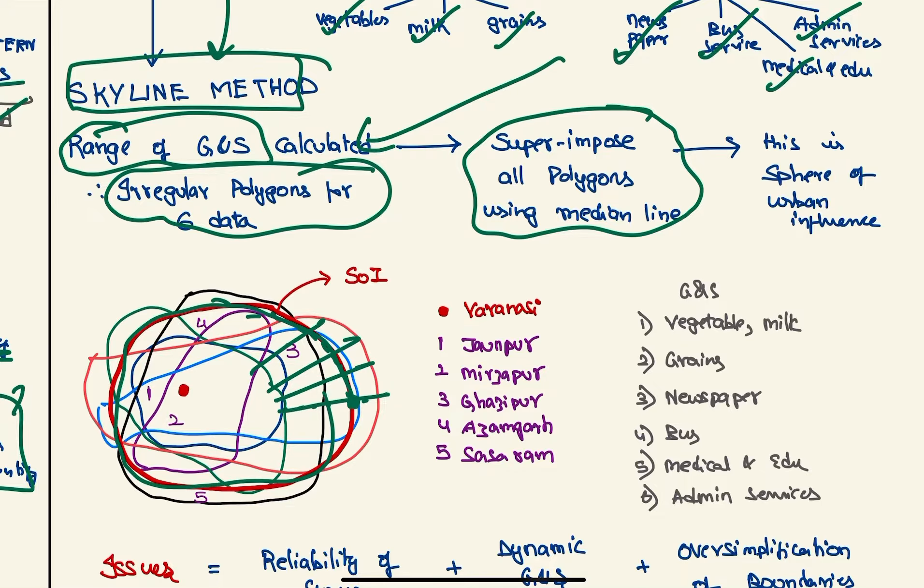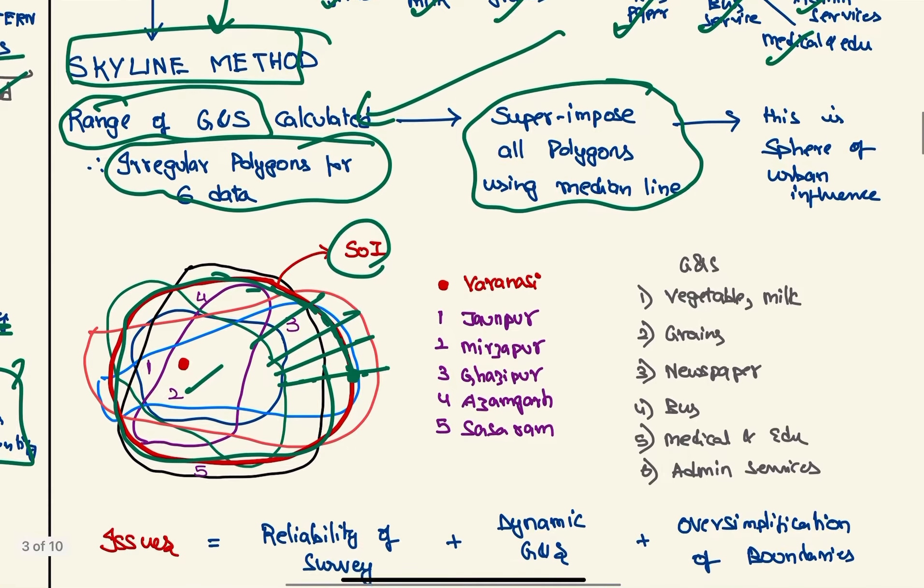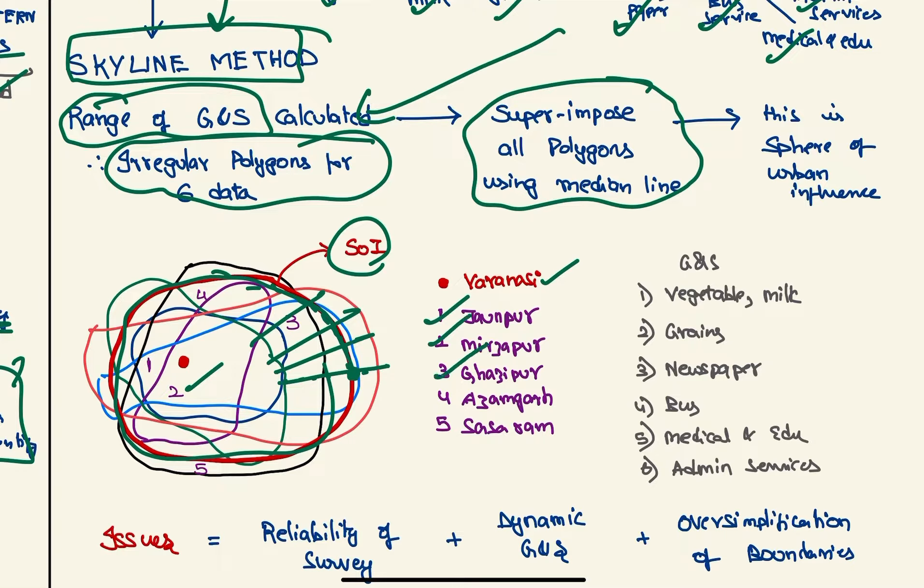And this will be the sphere of influence of Varanasi. As you can see, Jaunpur, Mirzapur, Ghazipur, and Azamgarh—all these are within the sphere of influence of Varanasi, and Sasaram is out of the sphere of influence of Varanasi.